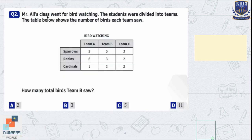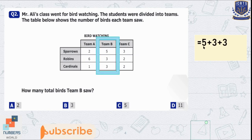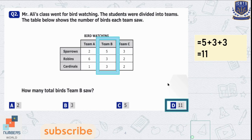Question number 2. Mr. Ali's class went for a bird watching. The students were divided into teams. The table below shows the number of birds each team saw. How many total birds did team B see? The record of team A, team B, and team C is given in the chart with three types of birds: sparrows, robins, and cardinals. Our interest is in the total for team B. So 5 plus 3 plus 3 is equal to 11. Team B saw 11 birds in total. Option D is the correct option.